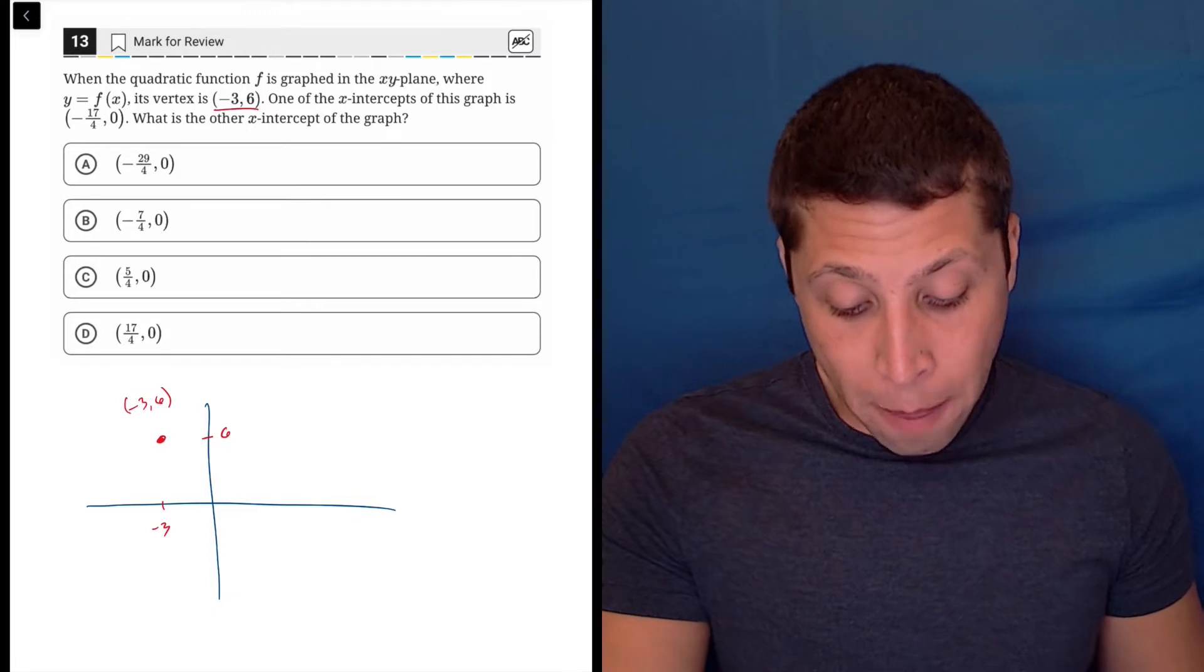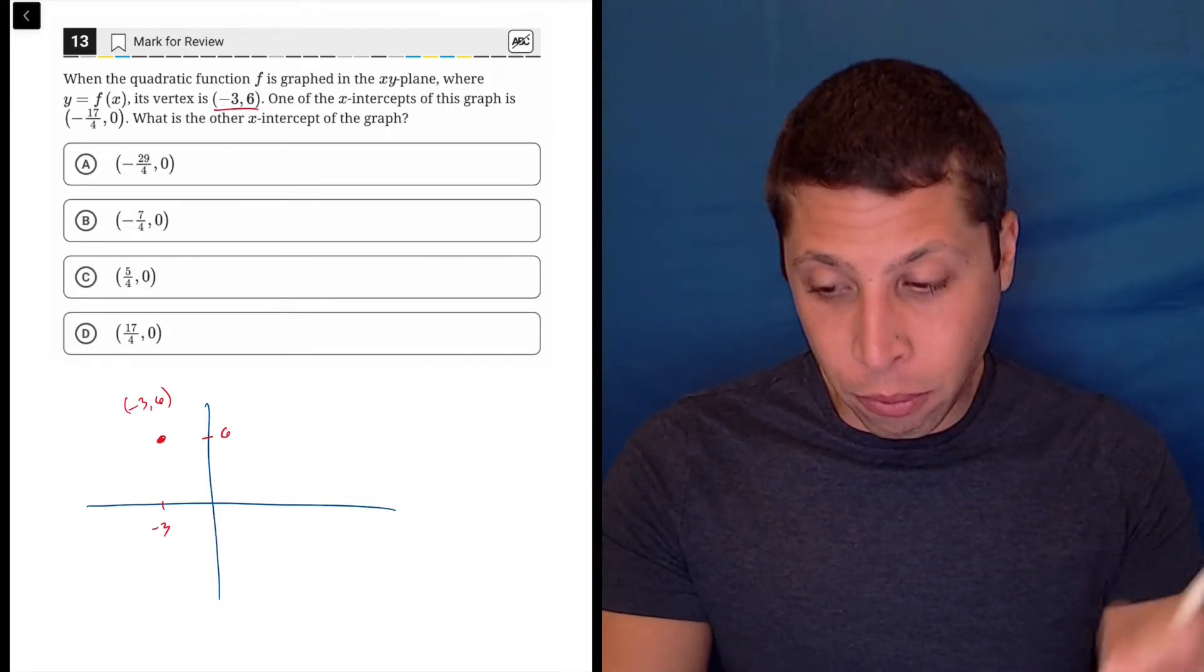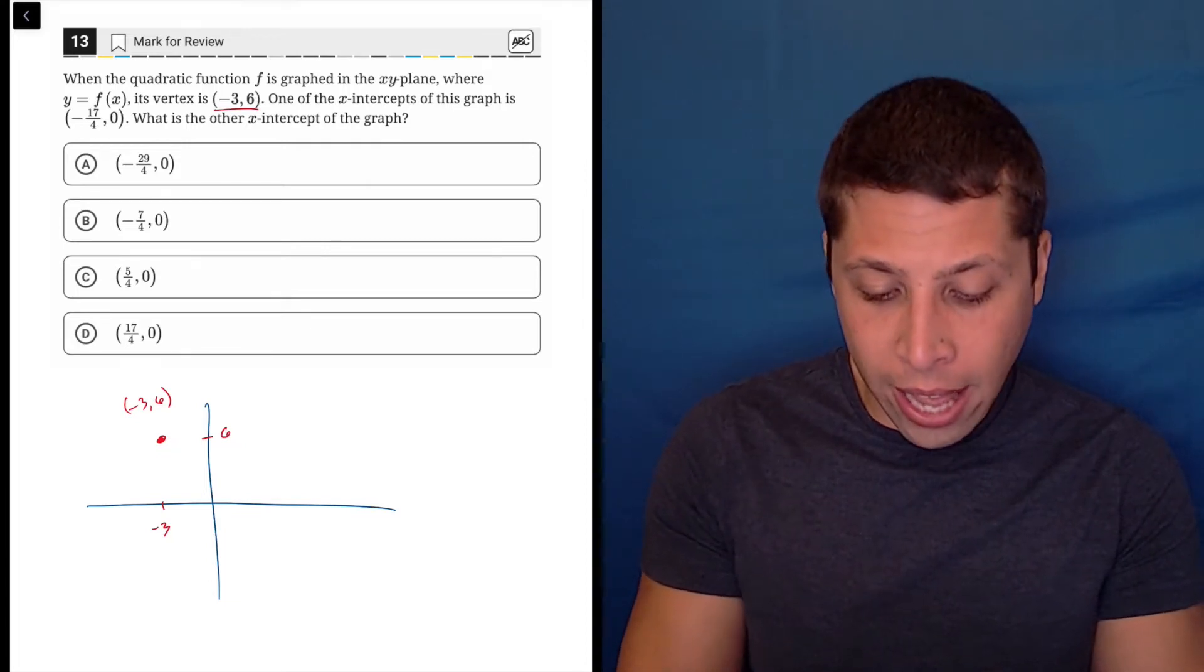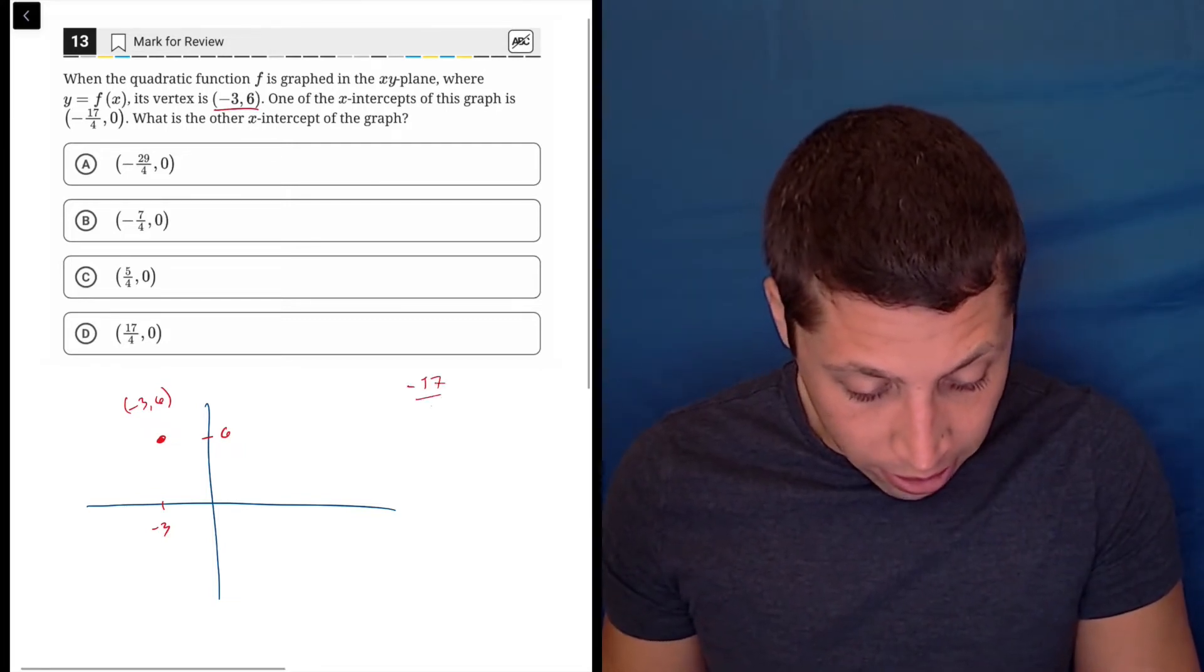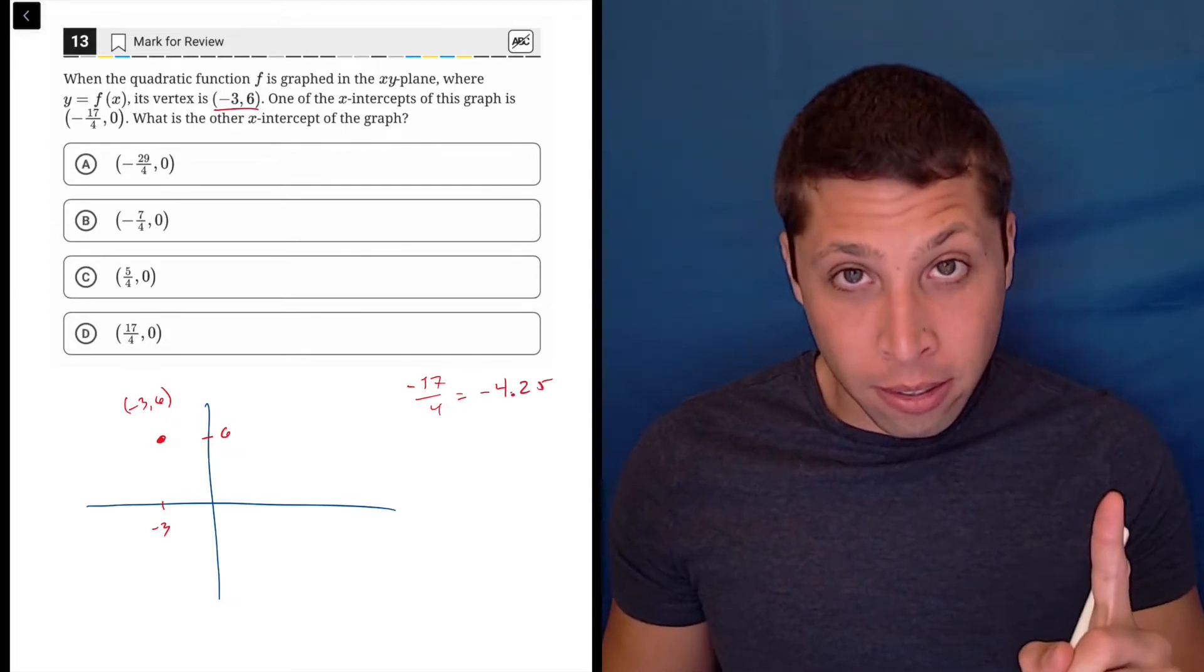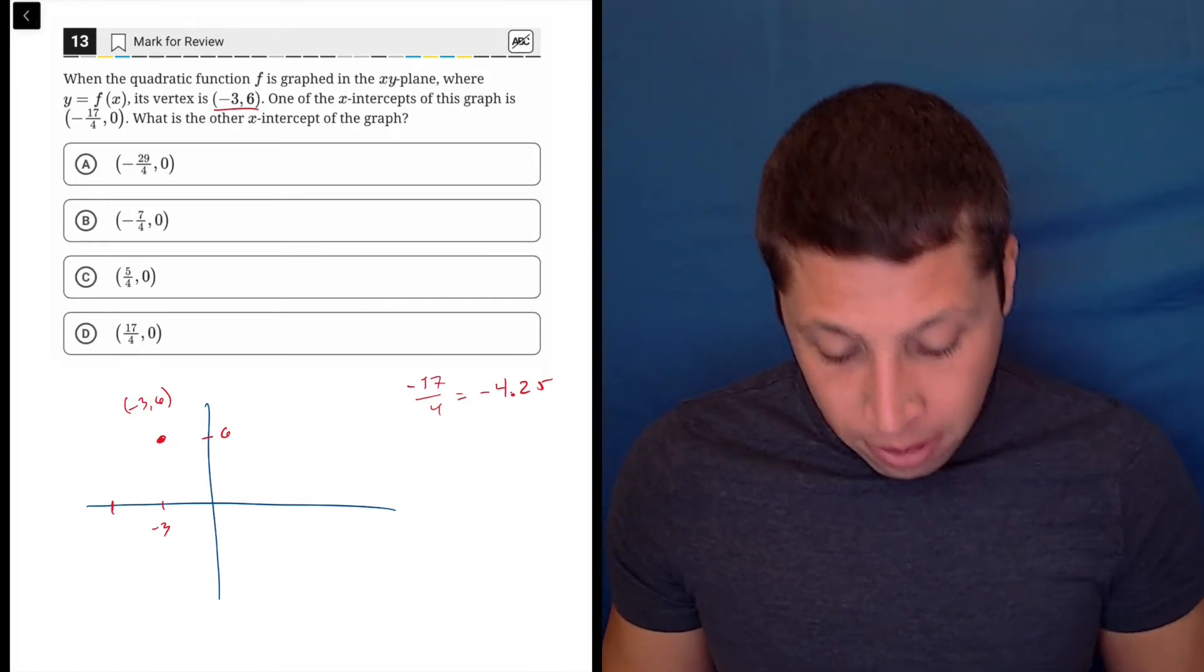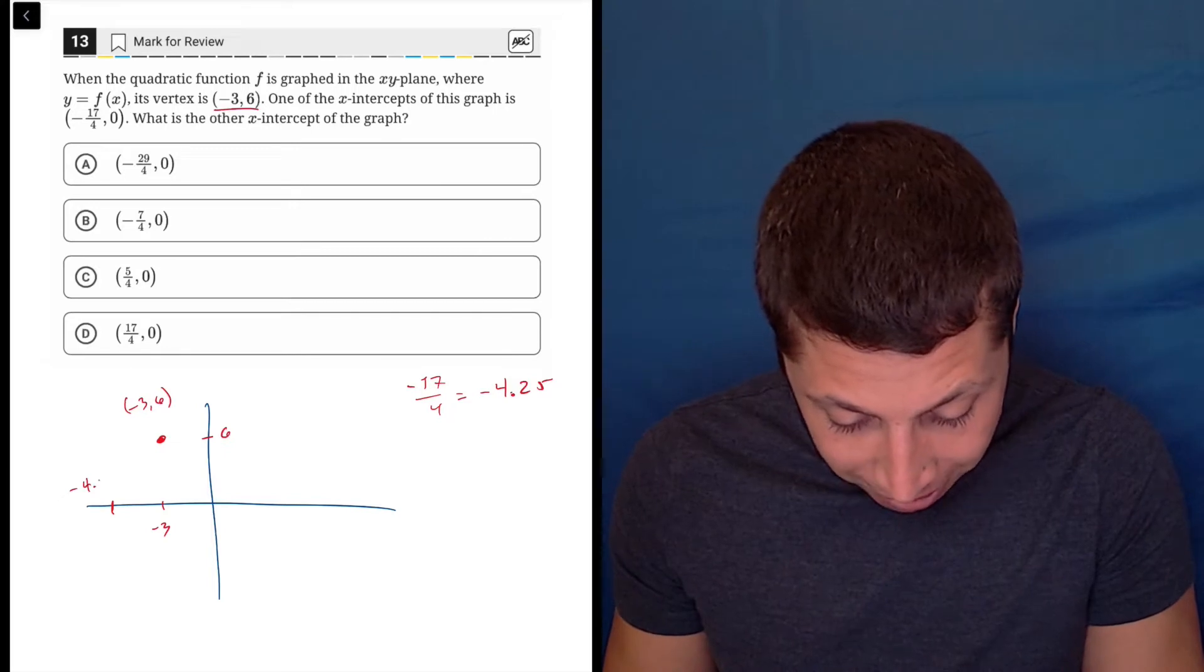Okay. So that means this thing is going to open downward. And negative 17 fourths, I might want to use the calculator to turn that into a decimal to understand that. Negative 17 fourths is negative 4.25. Which means that this intercept is to the left of my vertex. So that's here, negative 4.25.